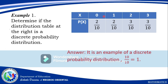Properties of discrete probability distribution: (1) The probability of each value of the random variable must be between or equal to 0 and 1 — in symbol: 0 ≤ P(X) ≤ 1. (2) The sum of all probabilities of all values must equal 1 — in symbol: ΣP(X) = 1. Example 1: If X = {0, 1, 2, 3} and P(X) = {2/10, 2/10, 3/10, 3/10}, then 2+2+3+3 = 10, so the total is 10/10 = 1. Therefore, it is a discrete probability distribution.